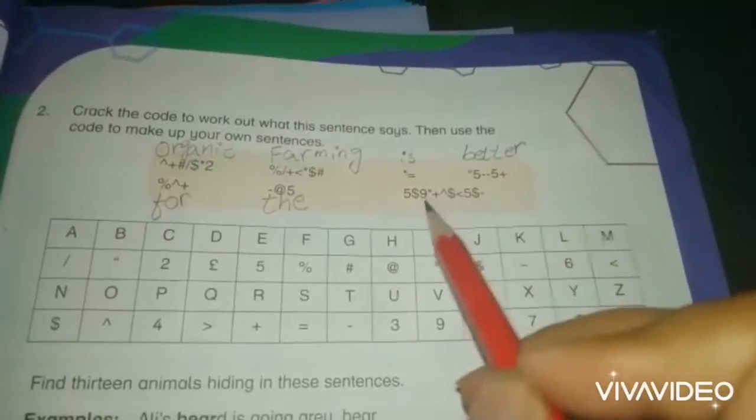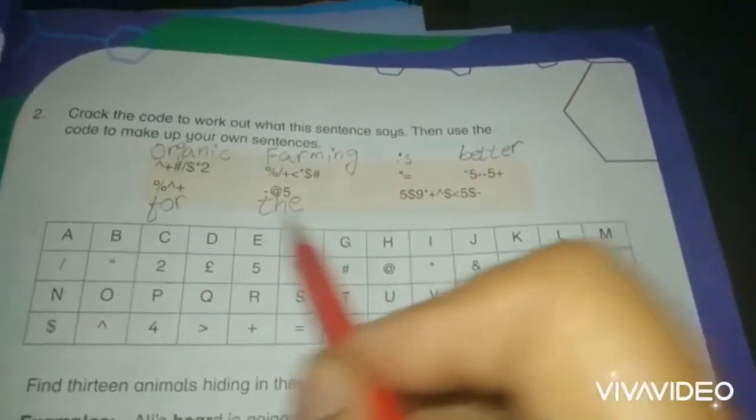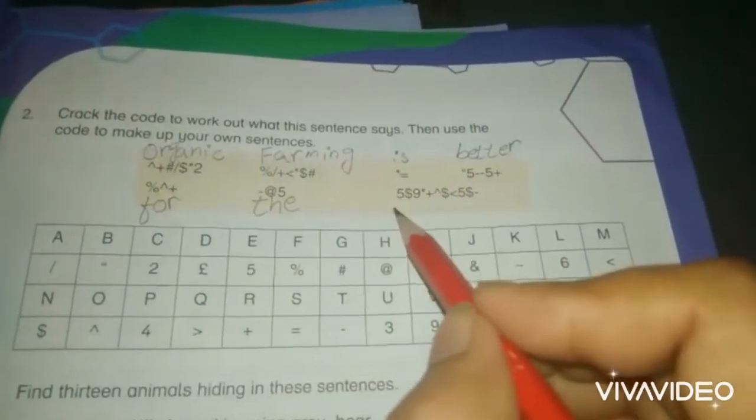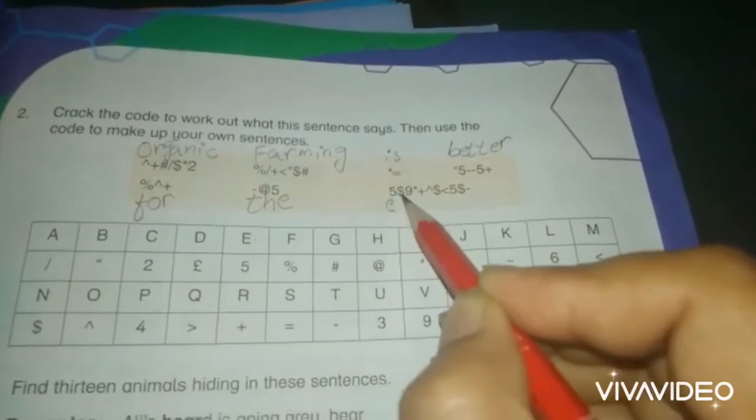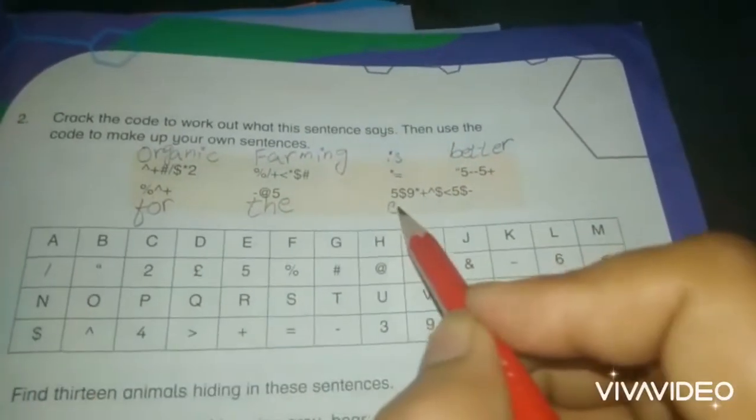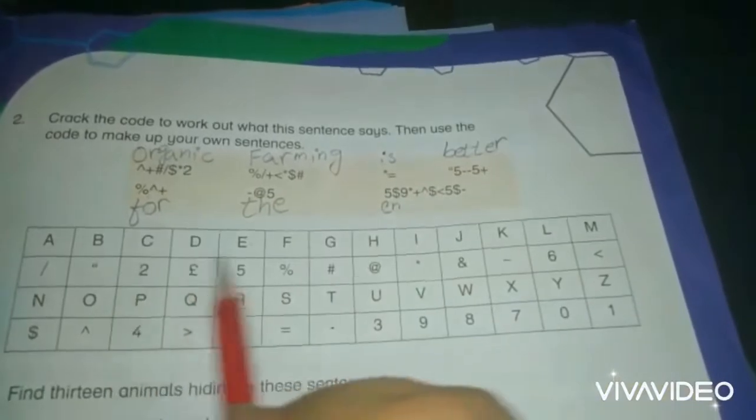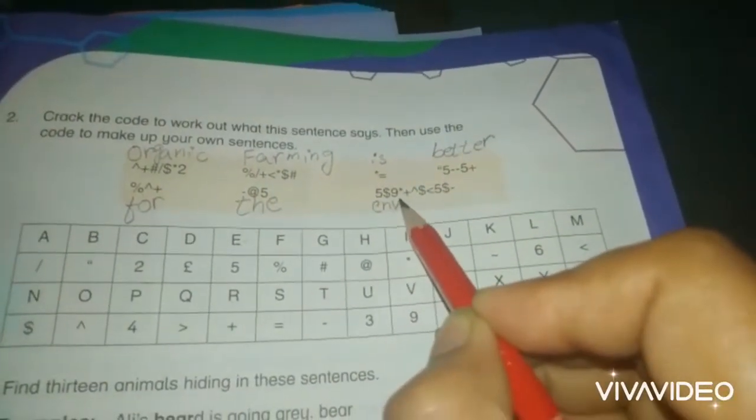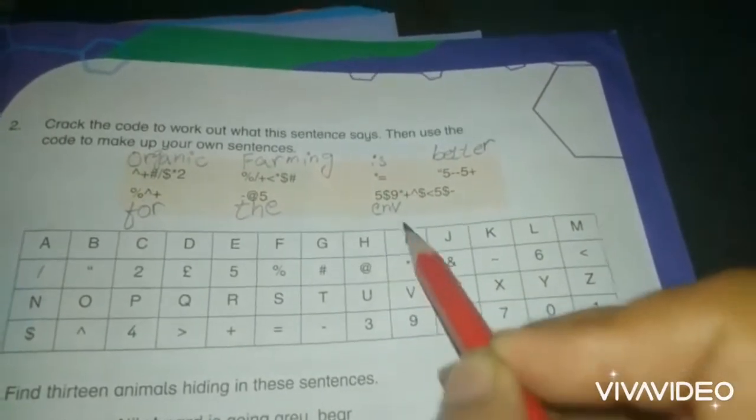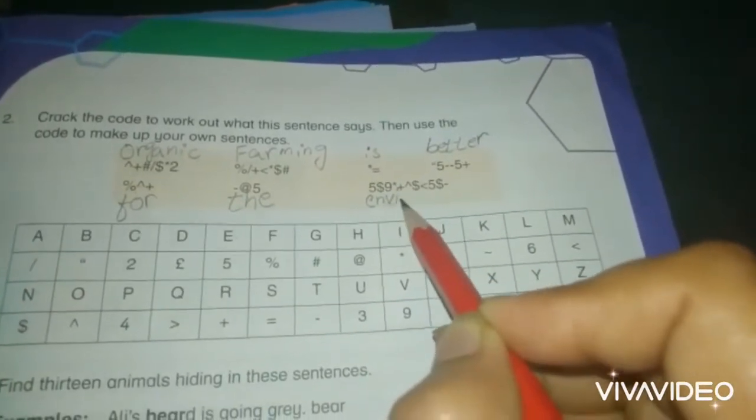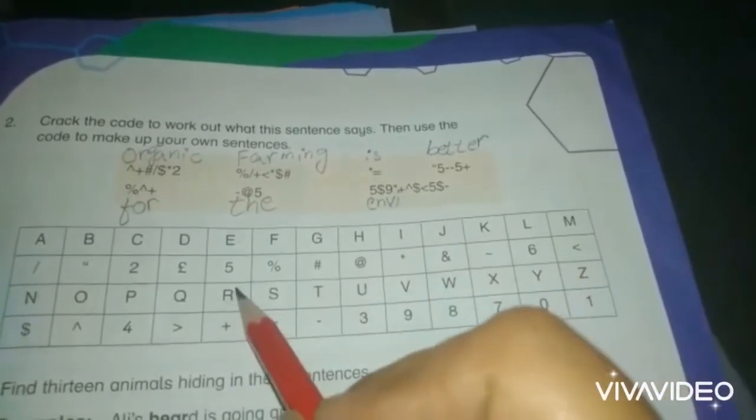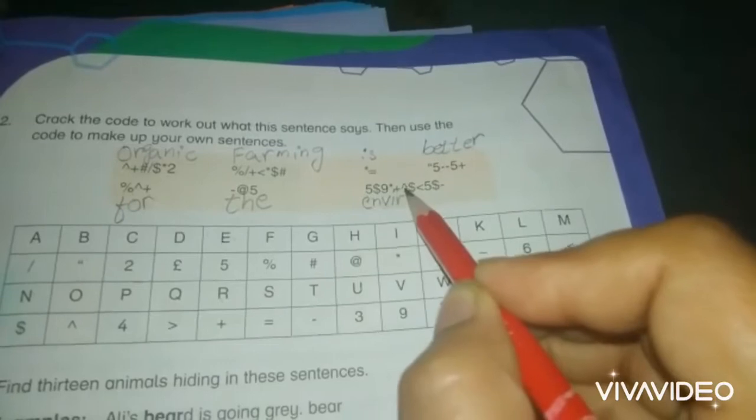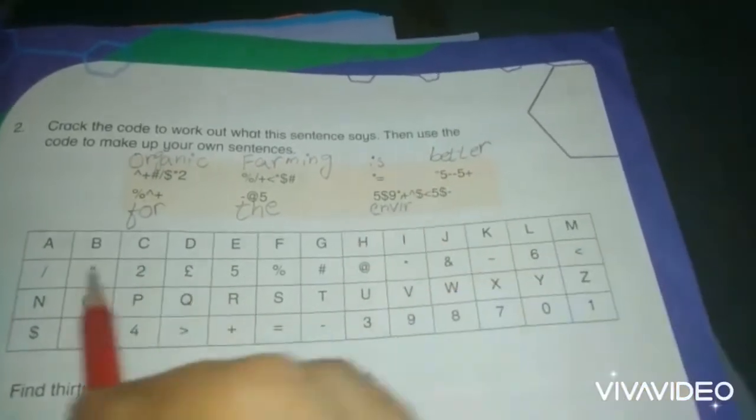The code starts with 5, and 5 has alphabet E, N, V, I. Plus represents R, O.